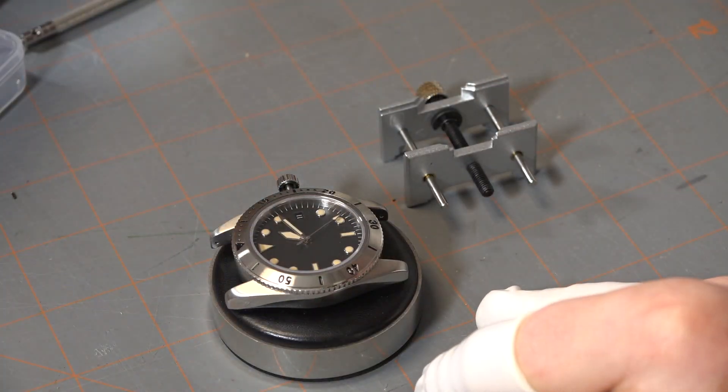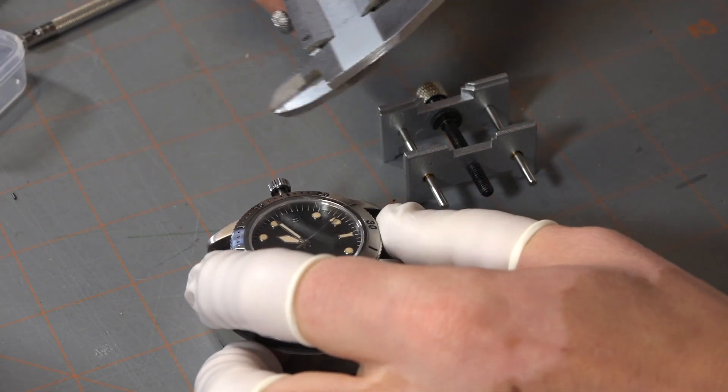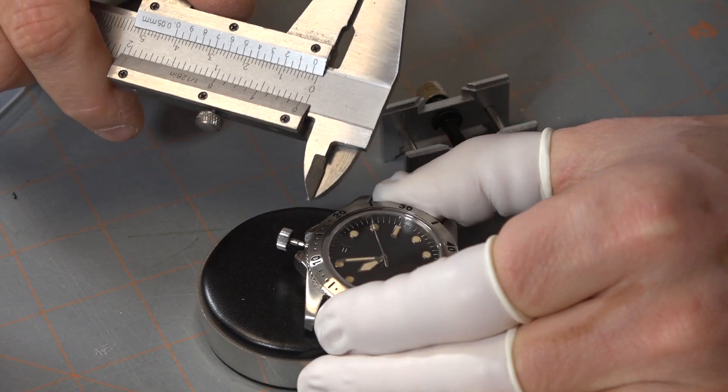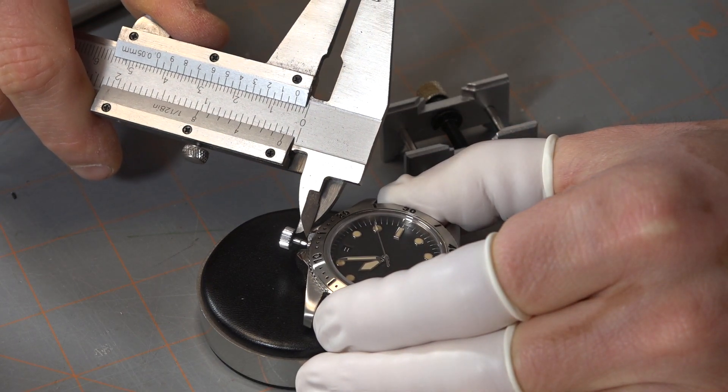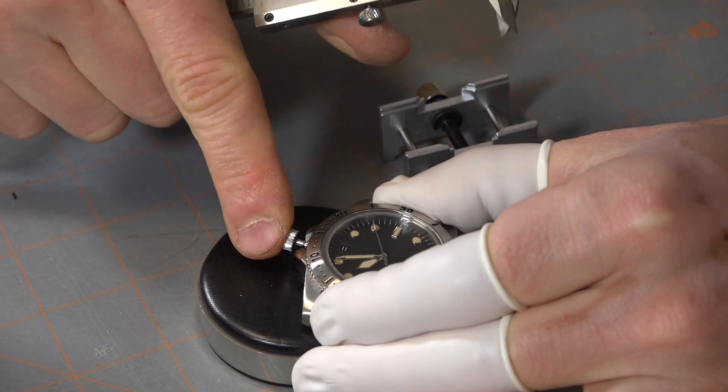All right, so now it's time to trim the stem. I have the stem that came with the movement screwed into the crown that came with the watch case, and now I'm just going to measure how much play there is. It looks like about three or four millimeters.